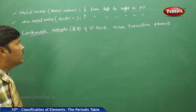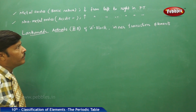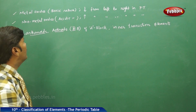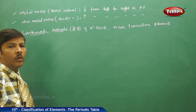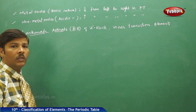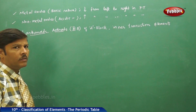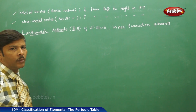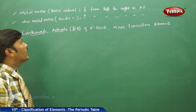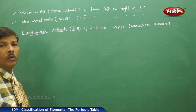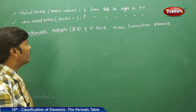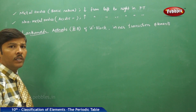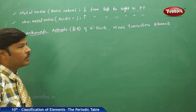These lanthanoids and actinoids of the D block also share the properties of both metallic oxides of the S block as well as non-metallic oxides of the P block. The D block elements usually share the common properties of both S block and P block.